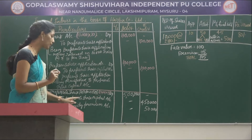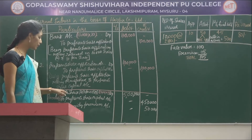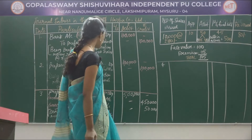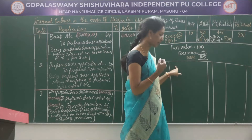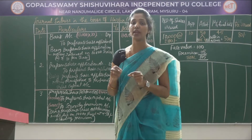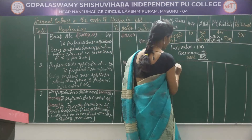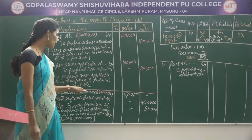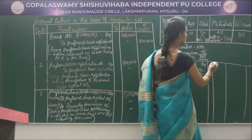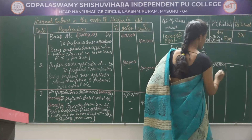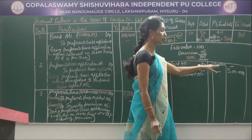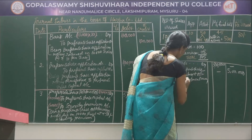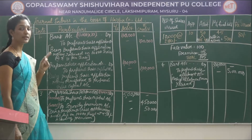Preference Share Allotment Account debited to Preference Share Capital Account and to Security Premium Account. Narration: Being preference share allotment money due on 10,000 shares at Rs 50 per share including premium. The fourth journal entry relates to allotment money received: Bank Account debited to Preference Share Allotment Account. The amount payable on allotment is Rs 5 lakh, so Bank Account debited with Rs 5 lakh and Preference Share Allotment Account credited with Rs 5 lakh — being allotment money received.